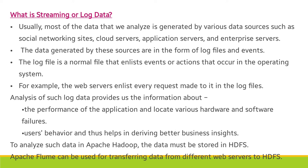Data also comes from cloud servers, Amazon web servers, application servers, and enterprise servers. Big data is generated by these sources, and it comes in the form of log files and events. A log file is a normal file that records endless events or actions that occur in the operating system — there is a list of log files maintained by the system.